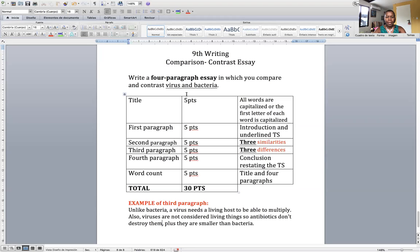Let me write this here, viruses and bacteria. And this is the rubric. Your title is worth five points. Remember that in English, in your title all the words are capitalized, or the first letter of each word is capitalized, kind of like this title Comparison Contrast Essay. That's worth five points if you get it correctly.